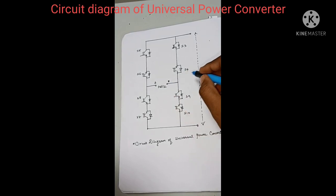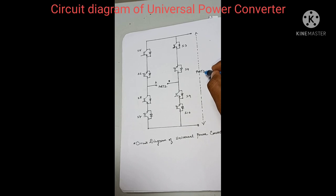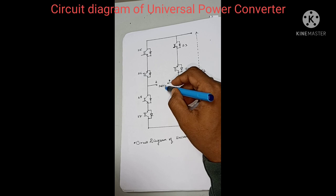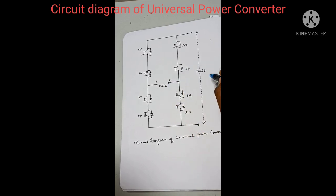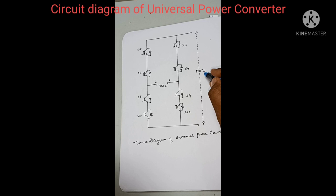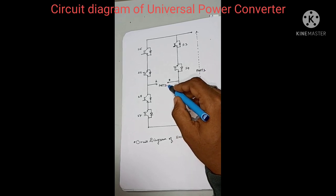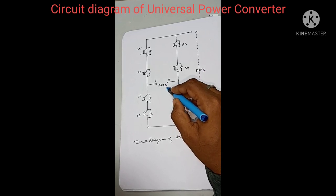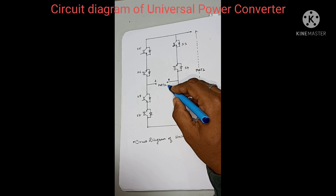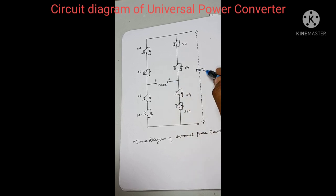The magic of this converter is that port one can be used either as an input or as an output, and port two can also behave vice versa. If we give input at port one, we can take the output from port two, and if we give input at port two, we can get the output from port one.